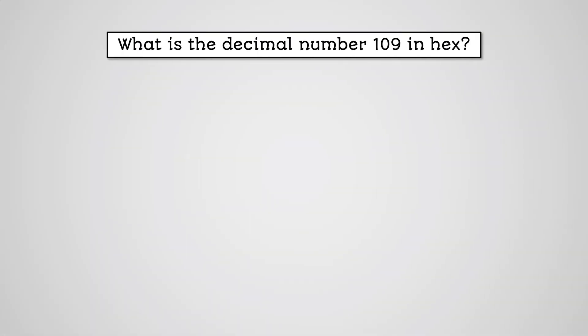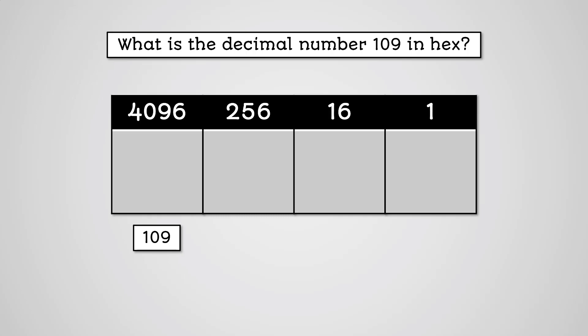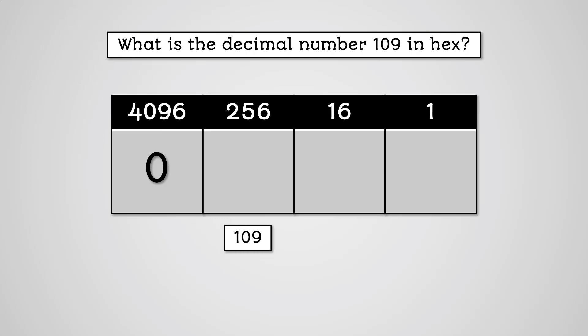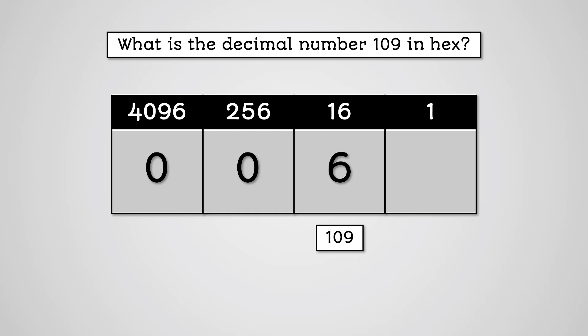That's a bit confusing, so let's try another example with a larger number. Let's work out the hex value for the decimal number 109. Will 4096 fit into 109? No, so we put a 0 in the 4096 column. Will 256 fit into 109? No, so we put a 0 in the 256 column. Will 16 fit into 109? Yes — how many times? 6. So we put 6 in the 16 column.